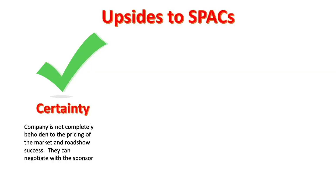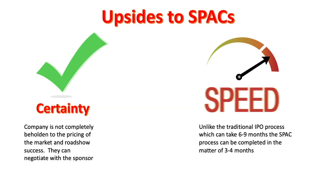Now let's talk about some of the upsides and downsides to SPACs. The first upside has to do with the certainty around pricing and valuation. In a traditional IPO process, it's not known until the end of that six to nine month period what price the company will get for its shares. Whereas in the SPAC process, it's known quite early on — once negotiations occur, they know how much money they'll receive and at what price per share. This is especially important for newer companies using shares to compensate employees. The second upside is the speed with which the company can come to the public market — as short as three to four months versus six to nine.